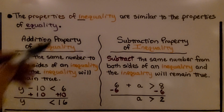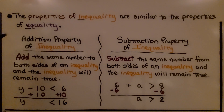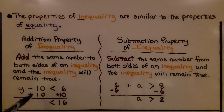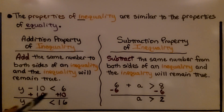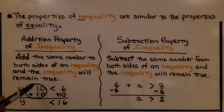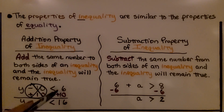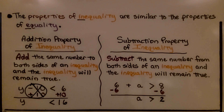The properties of inequality are similar to the properties of equality. The addition property of inequality says we can add the same number to both sides of an inequality, and the inequality will remain true. If we have y minus 10 is less than 6, we can add 10 to each side. That'll eliminate the minus 10, and on the other side we'll have 16, so y is any number less than 16 — it could be 15, 14, 13, or even negative 5.